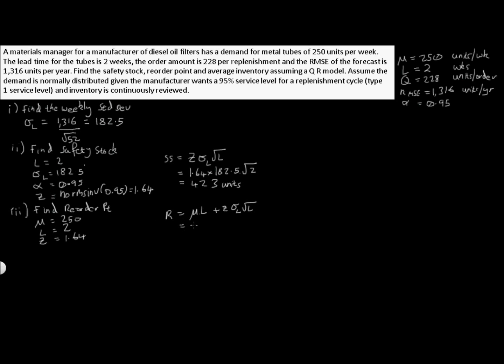Our equation for our reorder point is R equals mu times L plus our safety stock. So we have 250 for our mu, our lead time is 2 weeks, and our safety stock is 423. Summing this together we get 923 units. So that is our reorder point.